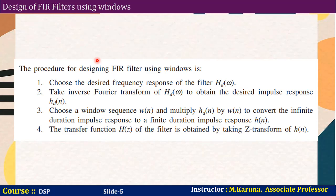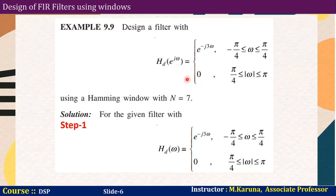Let us see one problem. Design a filter with HD of e to the power j omega equal to e to the power minus j3 omega, for omega between minus pi by 4 to pi by 4, and zero otherwise from pi by 4 to pi. Using Hamming window with N equal to 7 samples — a finite FIR filter.